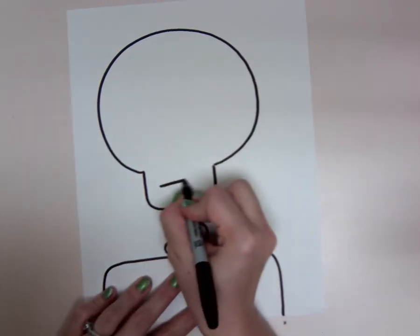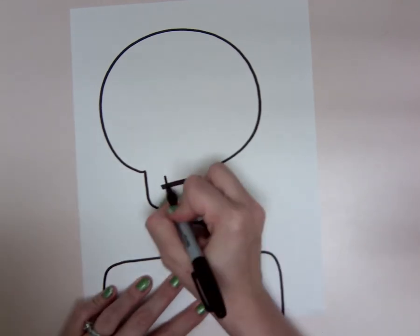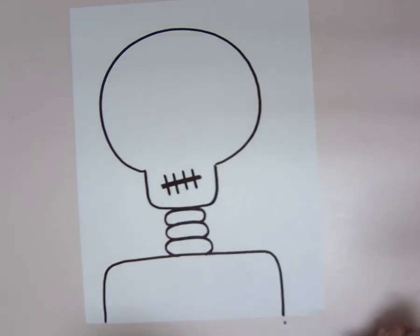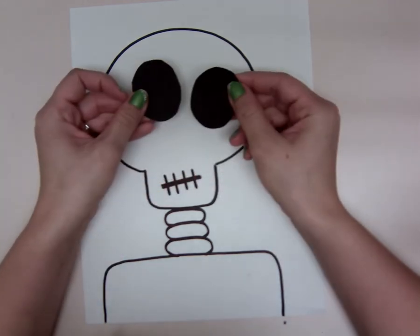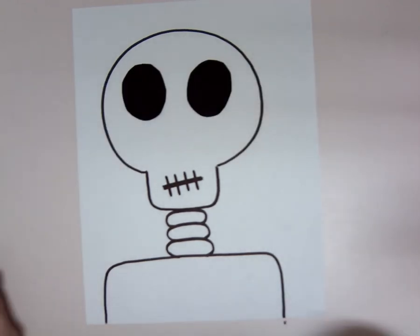You can go ahead and color in a mouth. Draw a horizontal line and then add three, I'd say four vertical lines going up and down. The next step, what I've found easier than coloring in black eyes, is using black paper and cutting out two circles and gluing them down. I find that to be a lot easier.